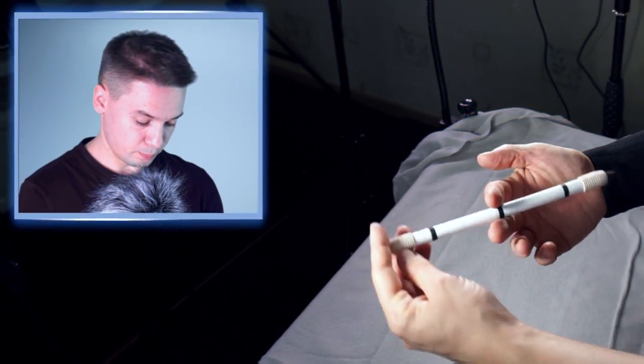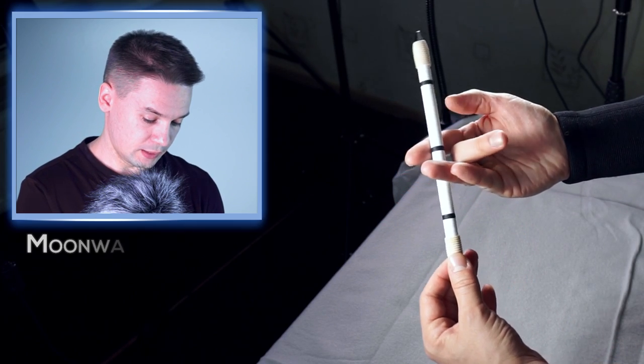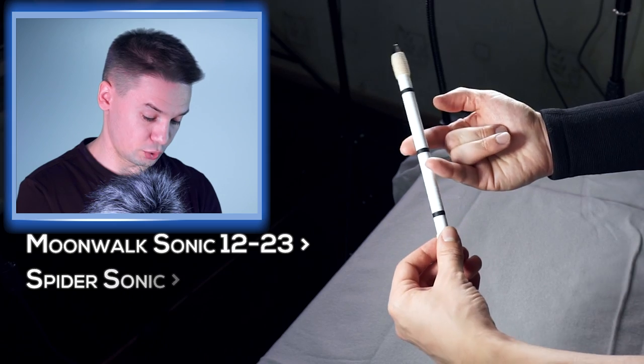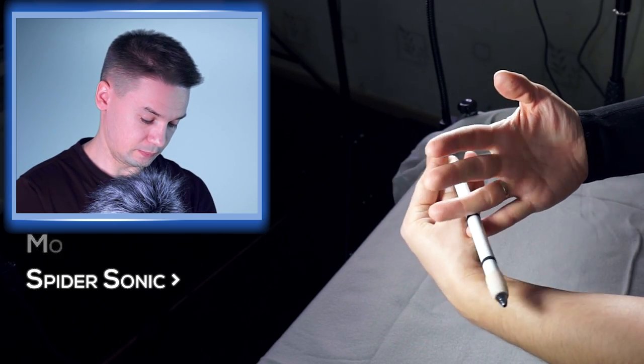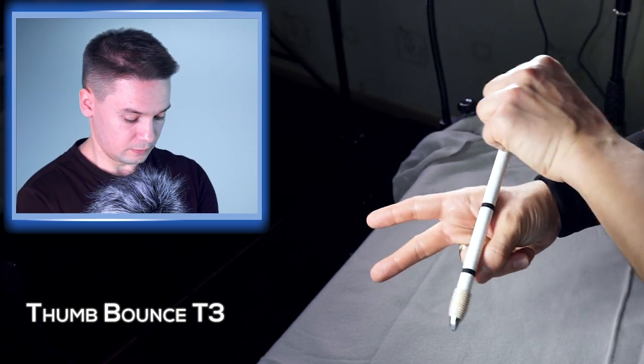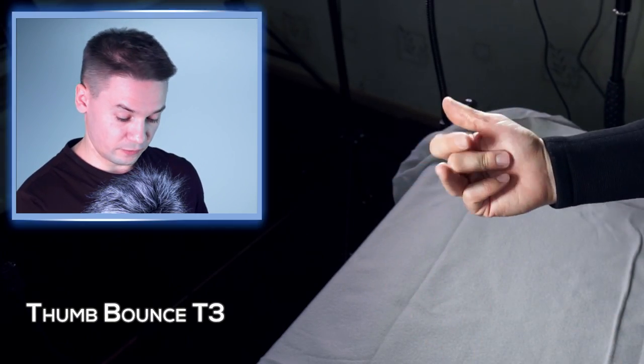So today's mini combo consists of the following tricks. First we do moonwalk sonic, interrupt it with spider sonic, and after that we do thumb bounce, hitting with your ring finger.